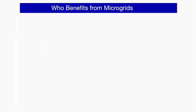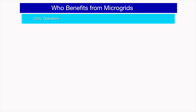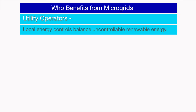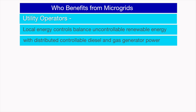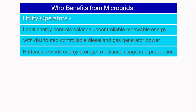Microgrids benefit many parties like utility operators. With local energy controls they can balance uncontrollable renewable energy sources such as wind and solar, with controllable diesel and gas generator power. Batteries provide energy storage to balance power usage and production.